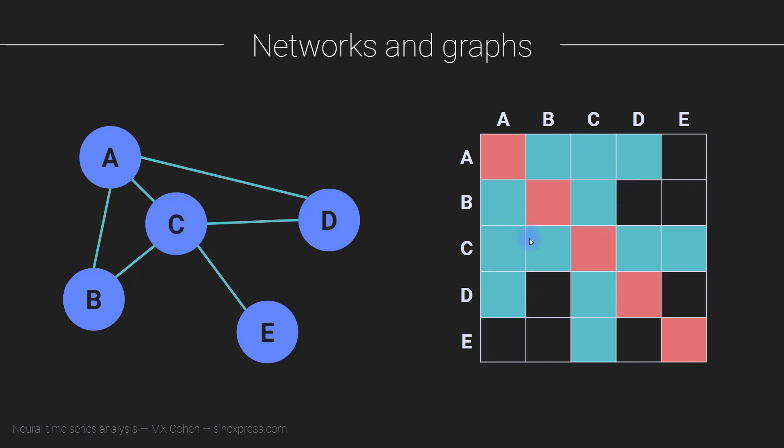This is illustrating two different ways of representing the same information. The graph is visually easy to interpret for a relatively small number of nodes, and this matrix form is better for working with in terms of the mathematics.